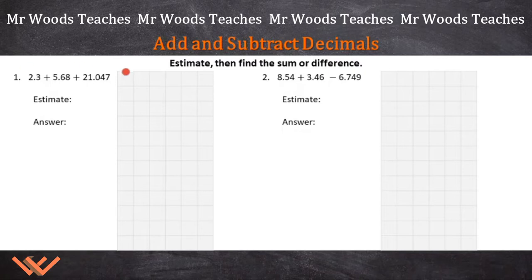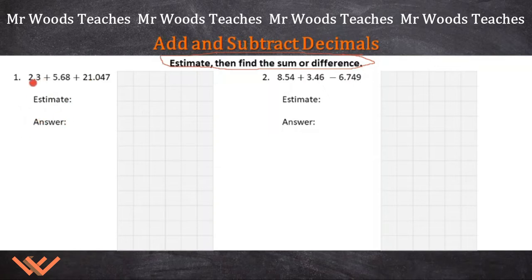Let's look at number one. First, look up here — it says estimate, then find the sum or difference. Always look to see if there's some overriding instruction you need to do first. So here, I'm going to estimate first. I'm looking at 2.3 plus 5.68 plus 21.047.